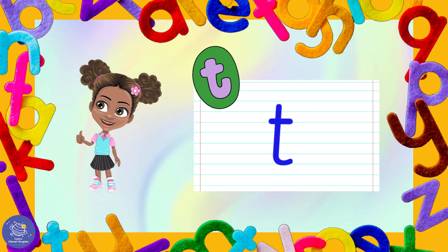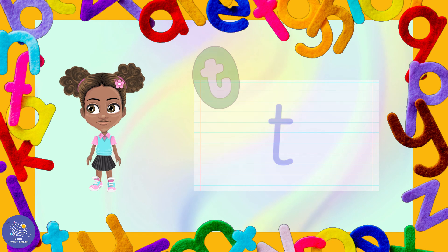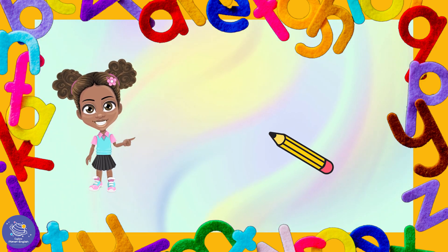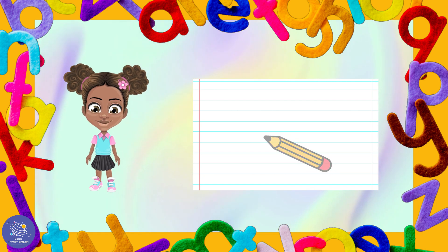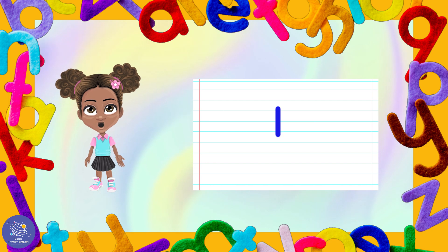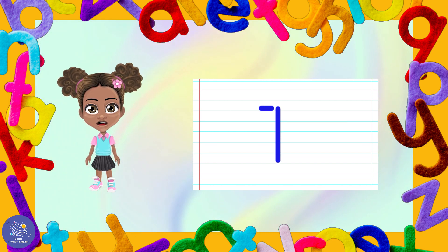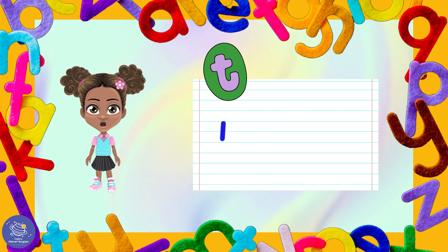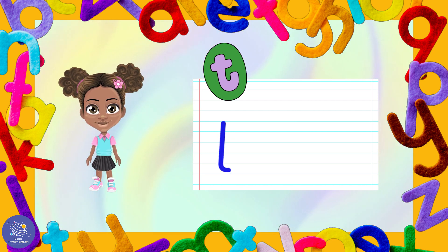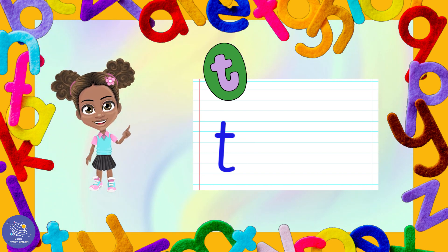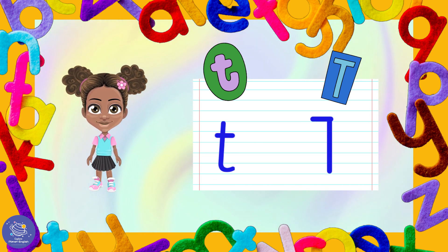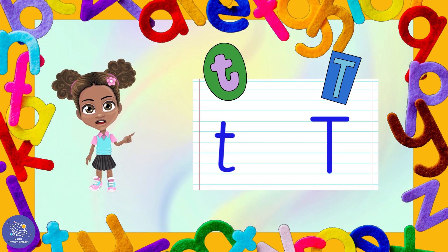Good job, well done! How do we write the big T? Get your pen and your paper ready. We go down, down, down, down, and then across, across. That is the big T. Let's review: small T — down, down, loop, across. Big T — down, down, across, across. That is the letter T!